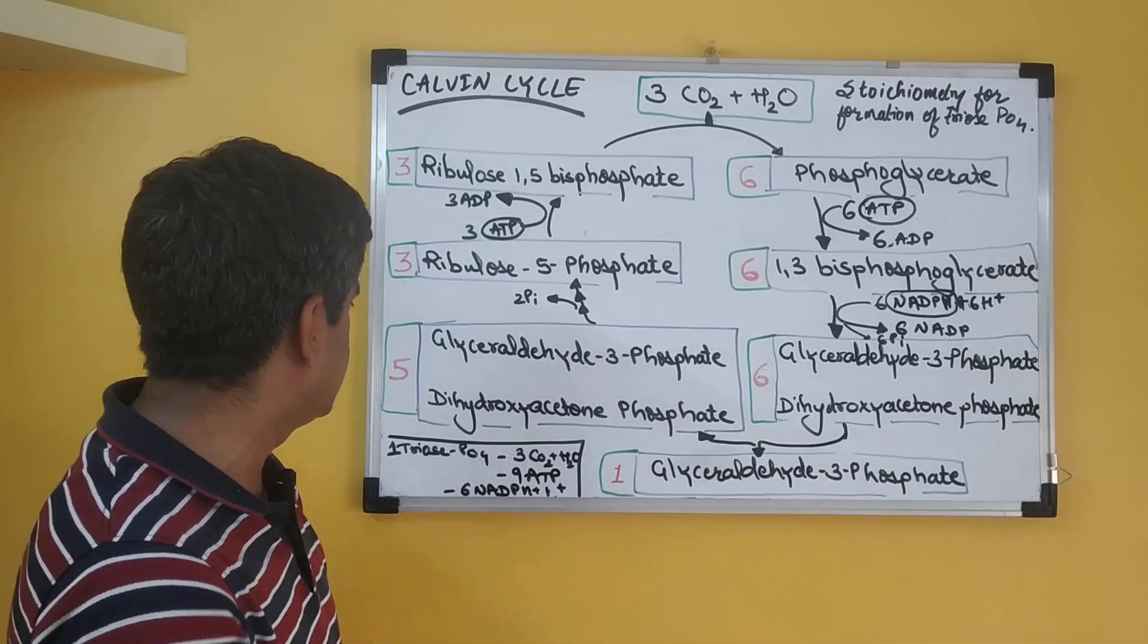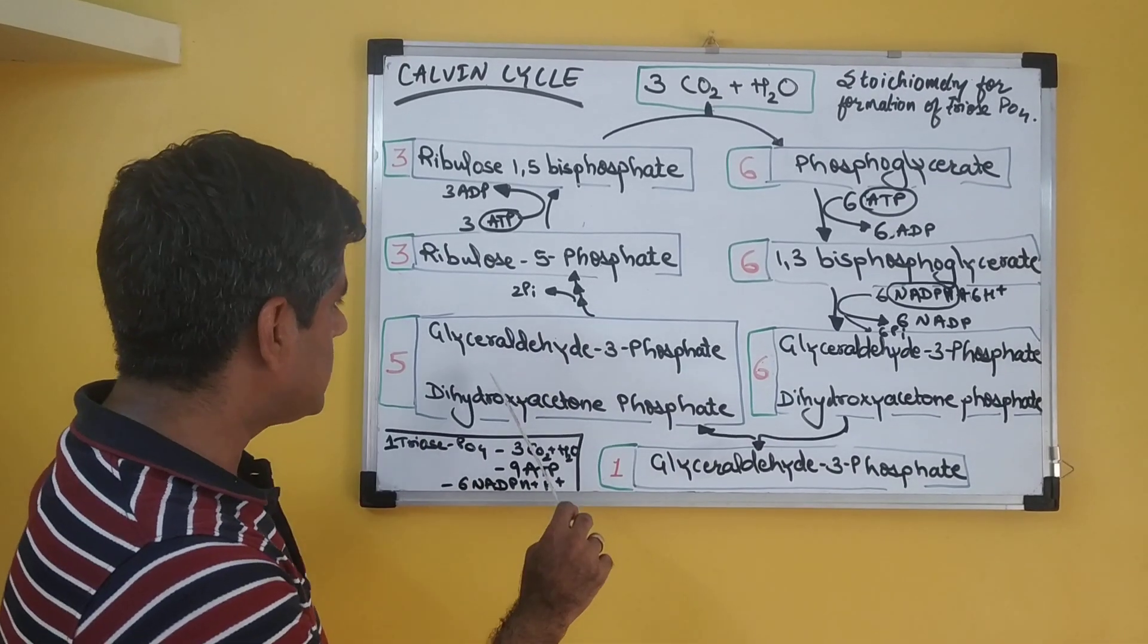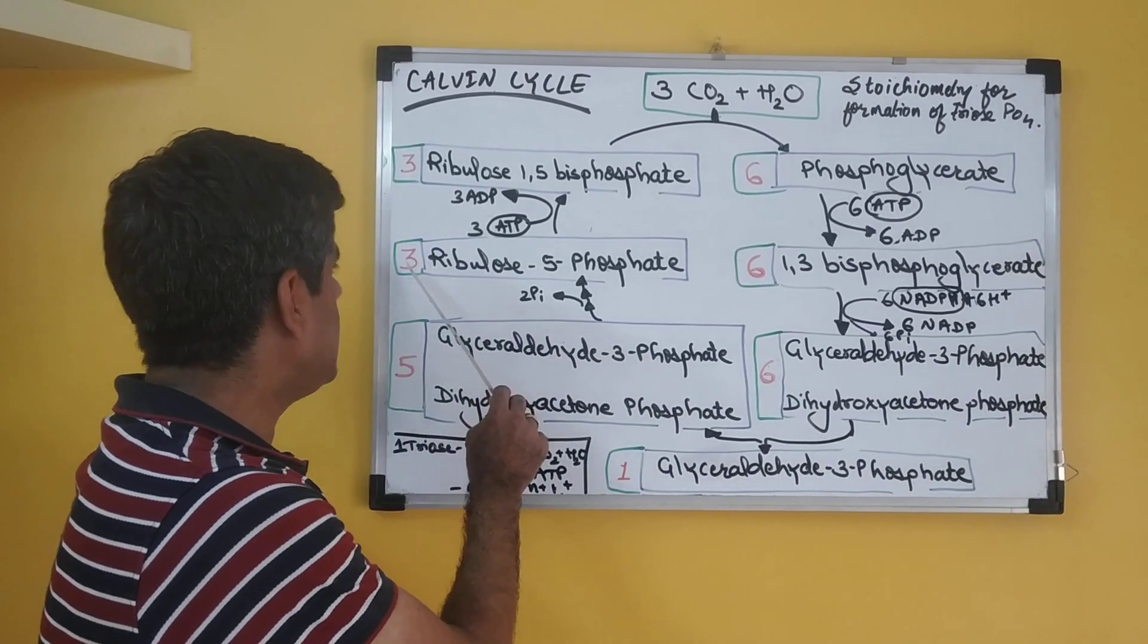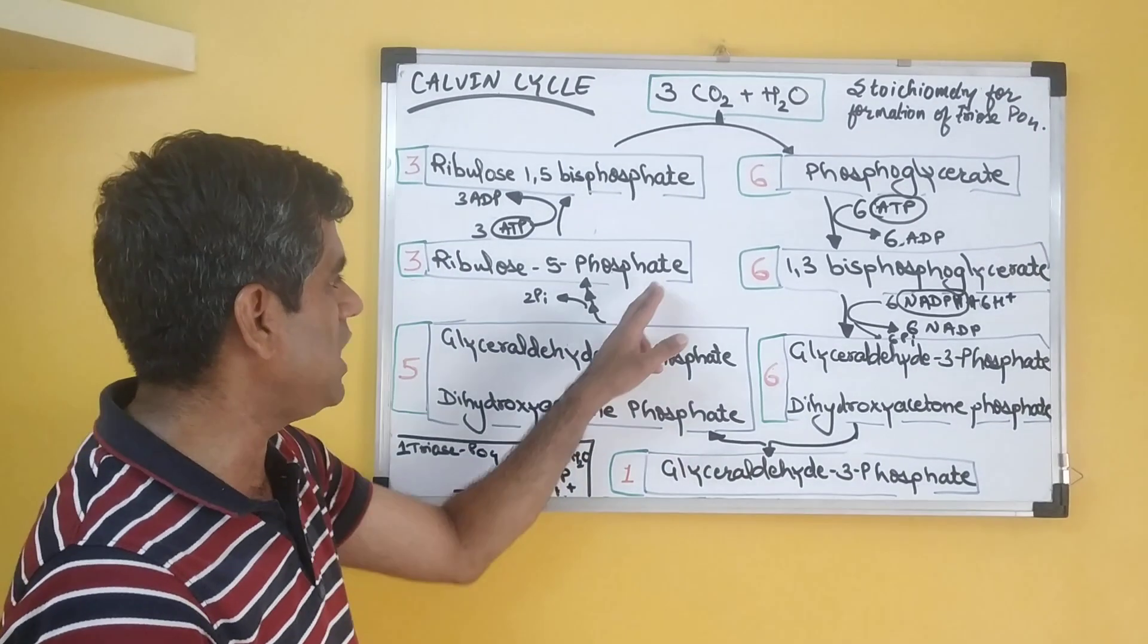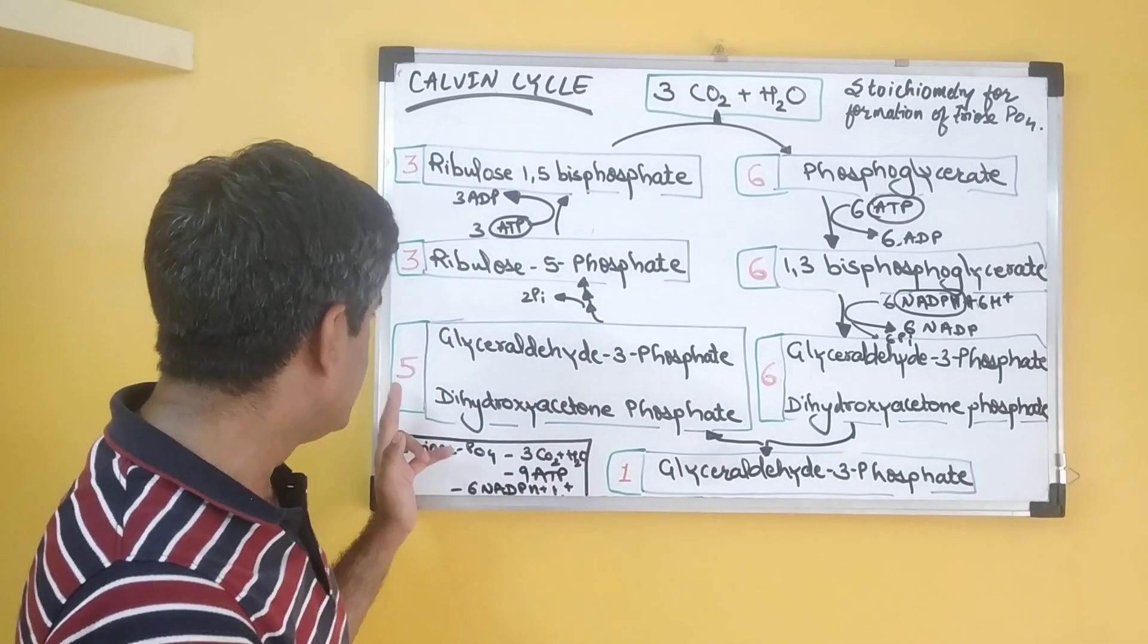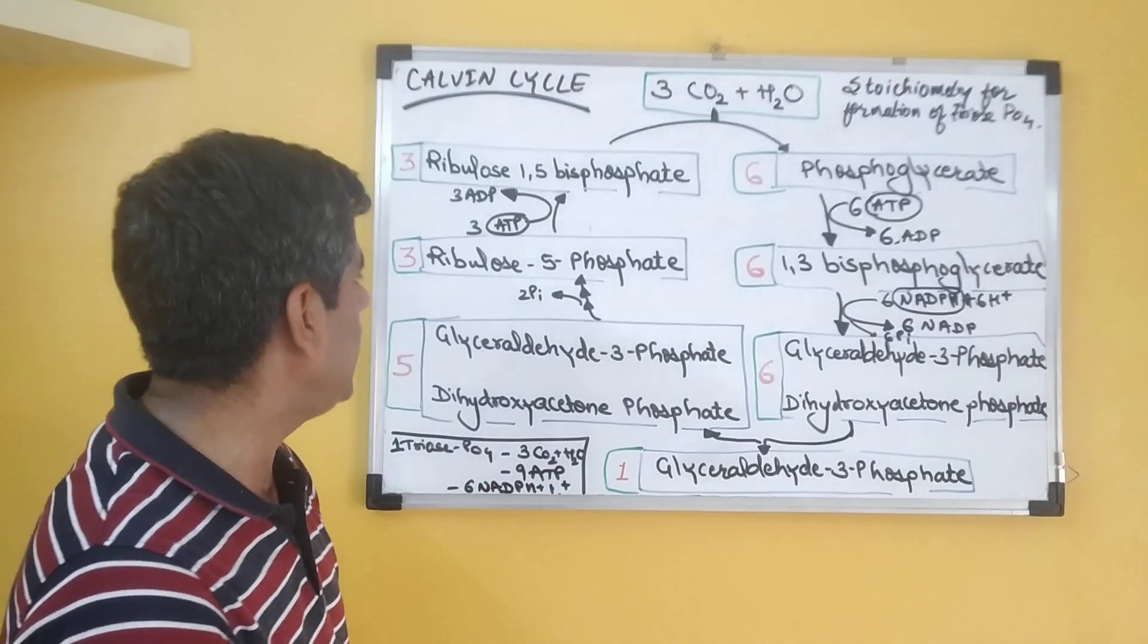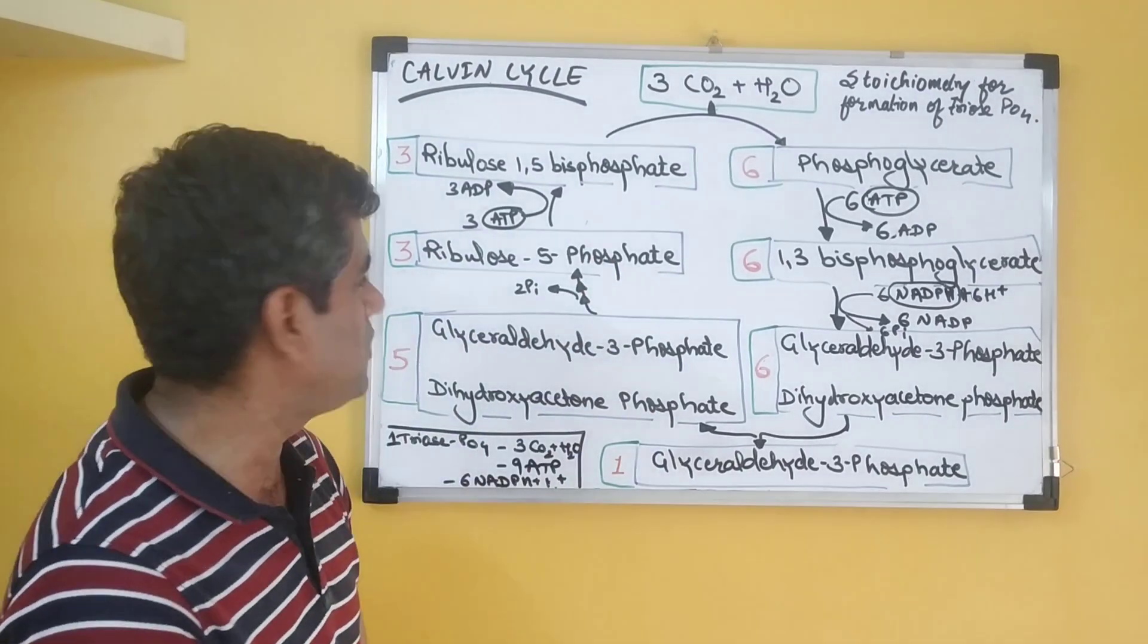Now they both isomerize with each other. We have 15 carbon atoms. This is then converted to three molecules of ribulose-5-phosphate, which is of each five carbon atoms. So we have 5 times 3, that is 15, or we have 3 times 5, again which is 15.